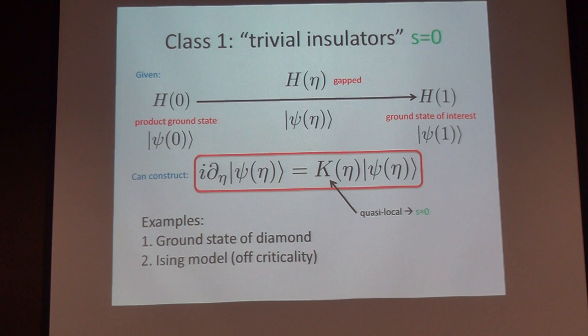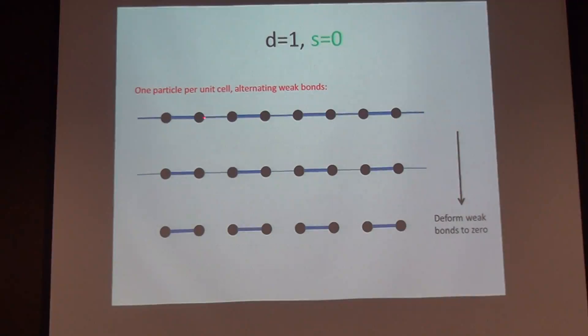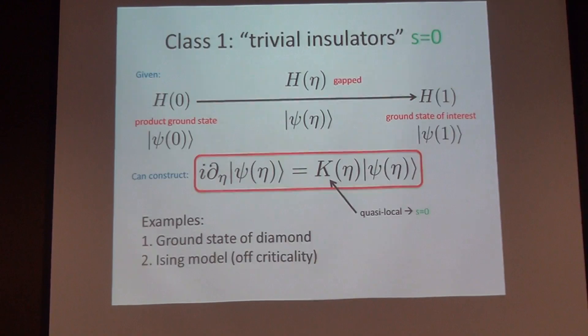Suppose you grant me this path. What's the path here? Just multiply this bond by some number x and change x from 1 to 0. That's the path. The gap always stays open, so that's a Hamiltonian path which connects you from this interesting ground state to a product state.